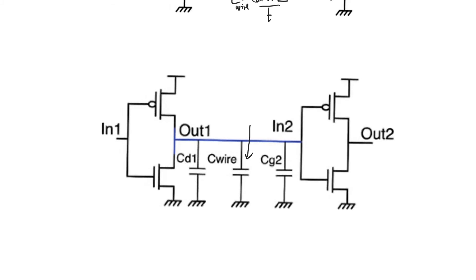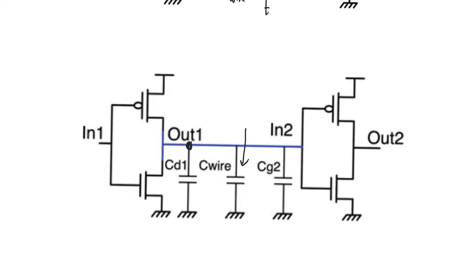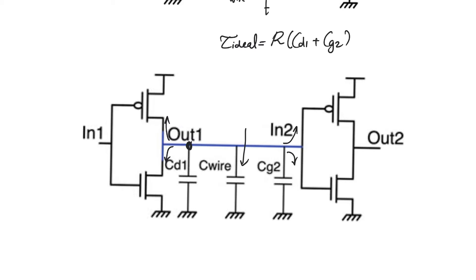The question is: what is the time constant at the output of this inverter, with and without taking the wire capacitance into consideration? The ideal time constant of the first inverter — the gate time constant — is going to be R, which is either Rn or Rp depending on whether we are doing a high-to-low or low-to-high transition, multiplied by the total capacitance observed: CD1 plus CG2, the drain capacitance (self-loading) and the gate input capacitance of the next stage.